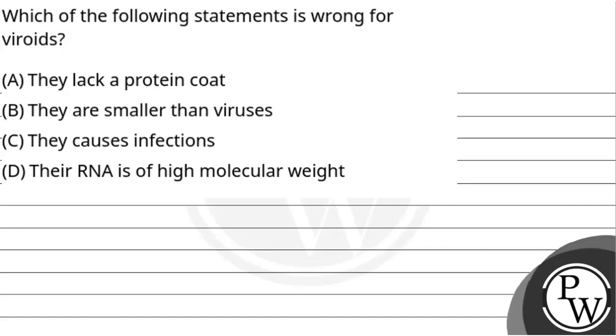Let's read the question: which of the following statement is wrong for viroids? A) They lack a protein coat. B) They are smaller than viruses. C) They cause infections. D) Their RNA is of higher molecular weight.